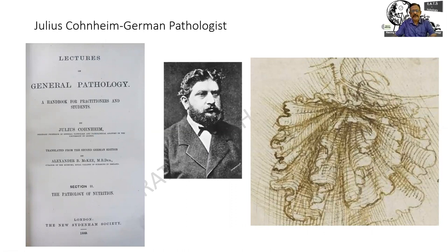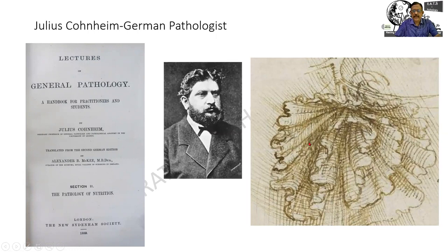And then there were other contributors also. Julius Cohnheim — he was a physiologist and a physician who studied the mesentery of the frog and showed the various changes in inflammation, including the development of an abscess.